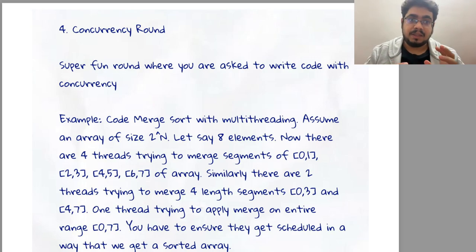So the size of the array would always be in the order of 2 to the power n. There are some threads which are scheduled to run merge algorithm from merge sort for certain lengths of the array. As an example, let's say we have an 8-length array, so there are 4 threads that are working on 2-size sub-arrays.